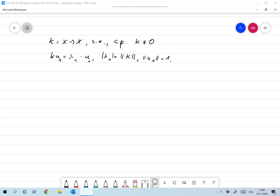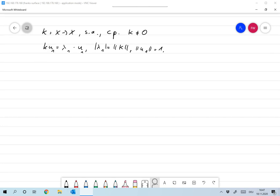The previous theorem stated that compact self-adjoint operators from a Hilbert space X into a Hilbert space X, which are not zero, have at least one non-vanishing eigenvalue. That means there is a pair of eigenvector and eigenvalue u₁ and λ₁ with the property that the absolute value of λ₁ is the norm of k and the norm of u₁ we choose to be 1.